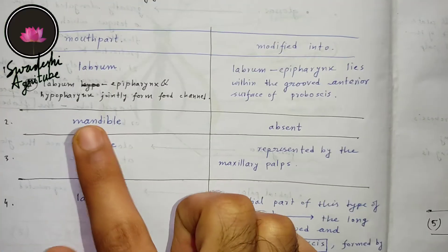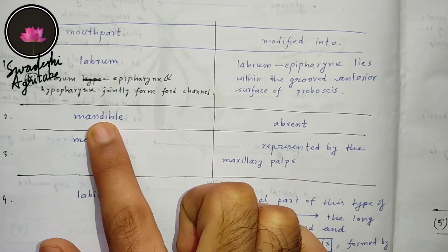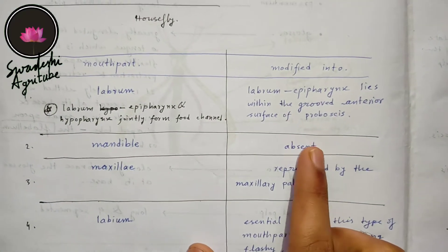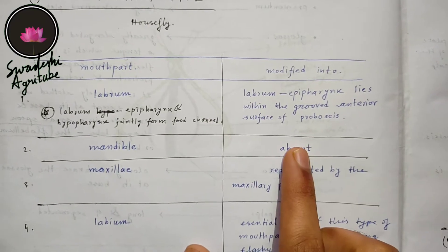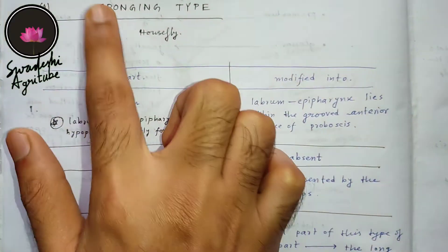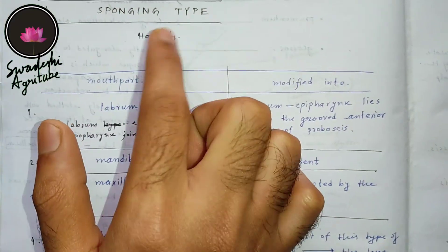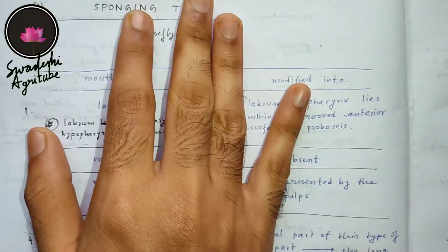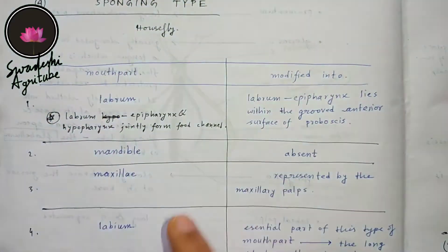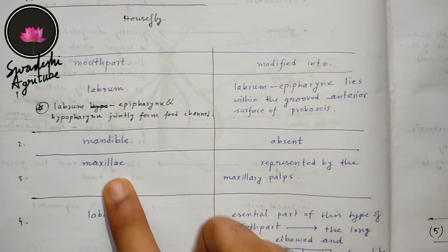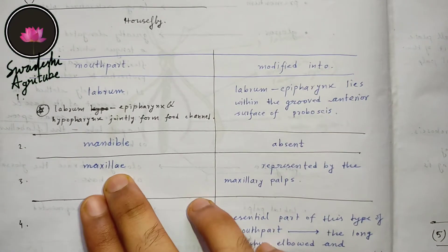Talking about the mandible, it is absent in the sponging type of mouthparts. The sponging type of mouthparts is seen in the housefly.